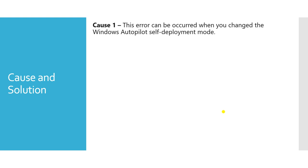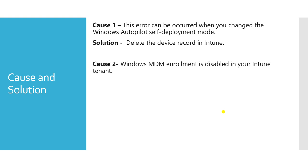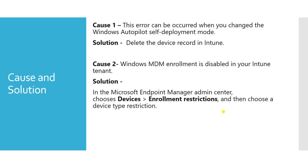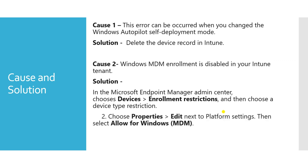The cause of error 0x80180014 is that it can occur when you change the Windows Autopilot self-deployment mode. The solution is to delete the device record in Intune. If the cause is that Windows MDM enrollment is blocked, go to the Microsoft Intune admin center, navigate to Device Enrollment Restrictions, choose Device Type Restrictions, edit the platform settings, allow Windows MDM, and then save.